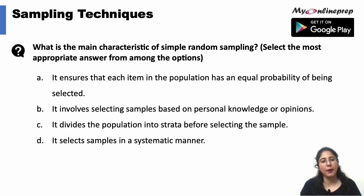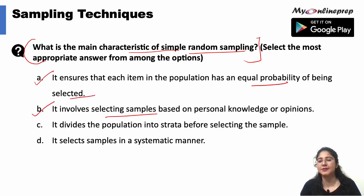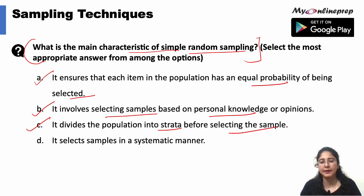Proceeding with the next question: what is the main characteristic of simple random sampling? First, it ensures that each item in the population has an equal probability of being selected. Second, it involves selecting samples based on personal knowledge or opinions. Third, it divides the population into strata before selecting the sample. Fourth, it selects a sample in a systematic manner.